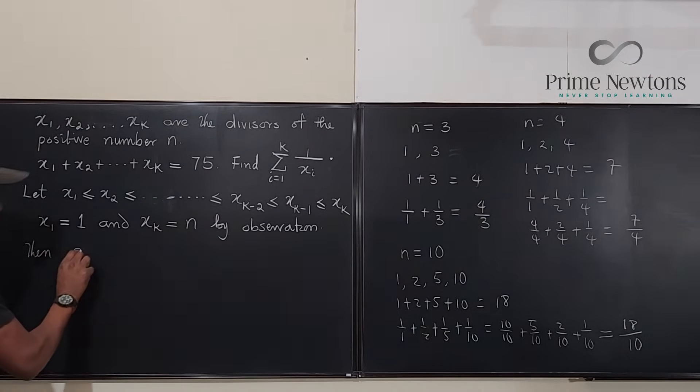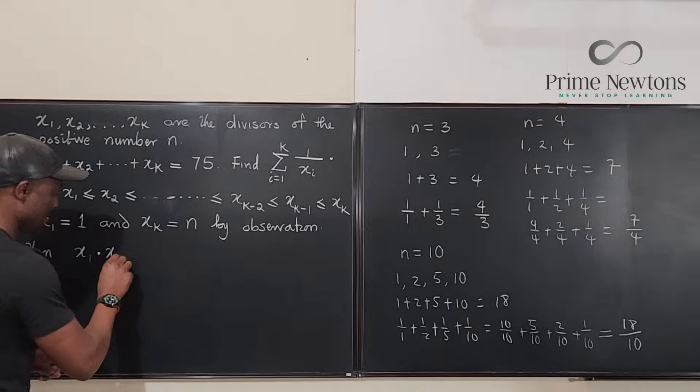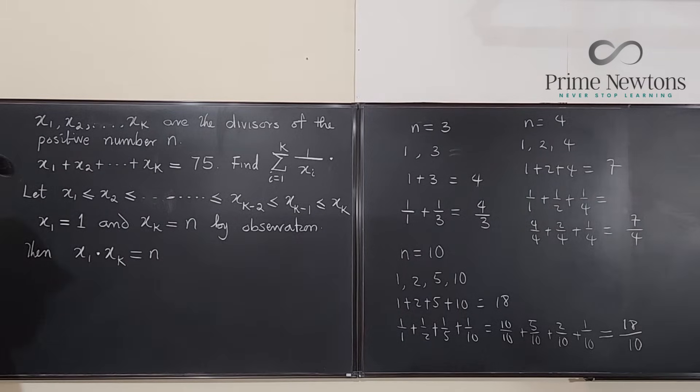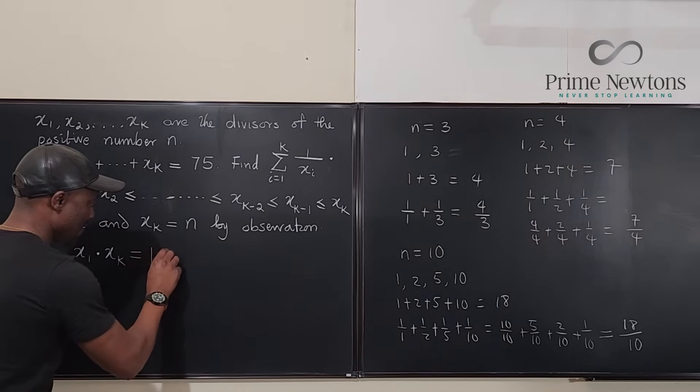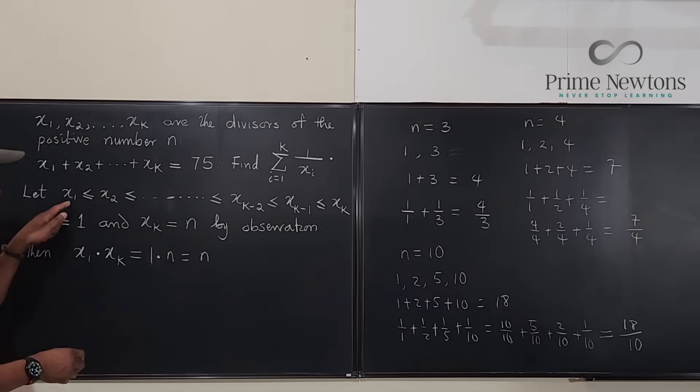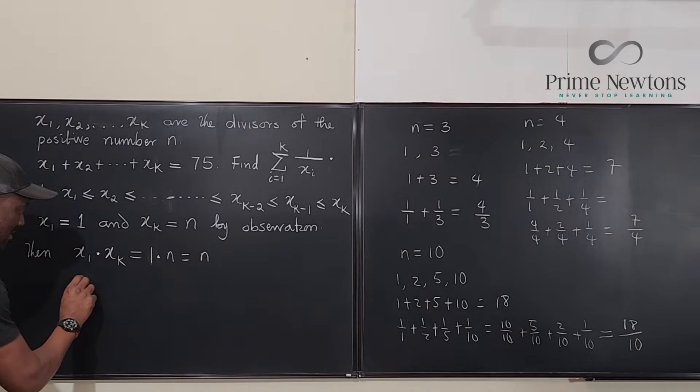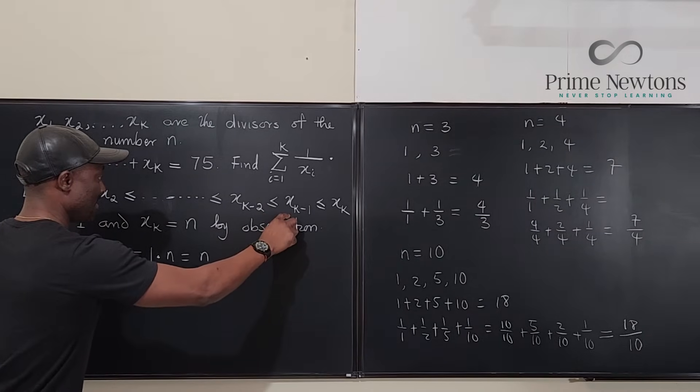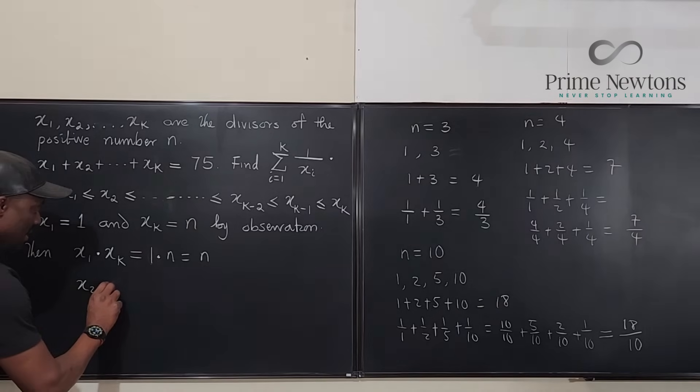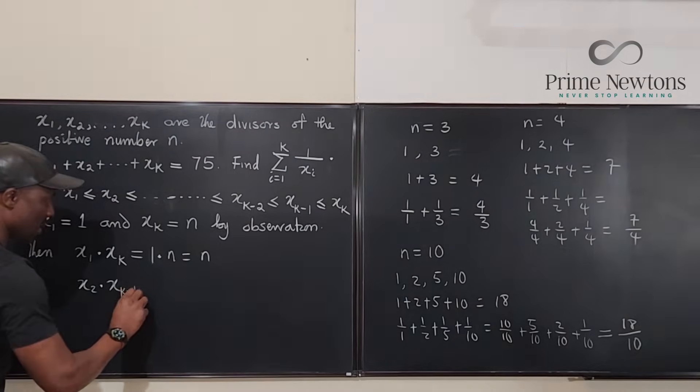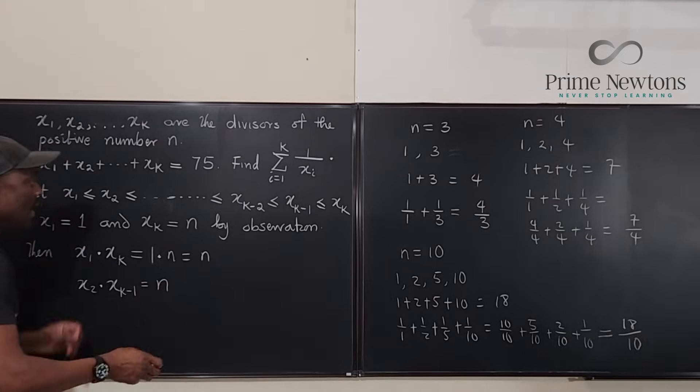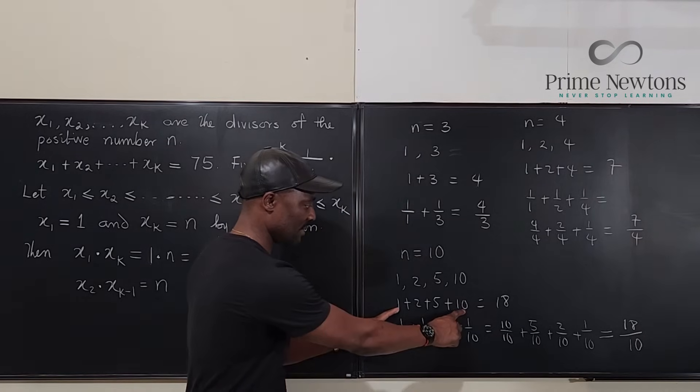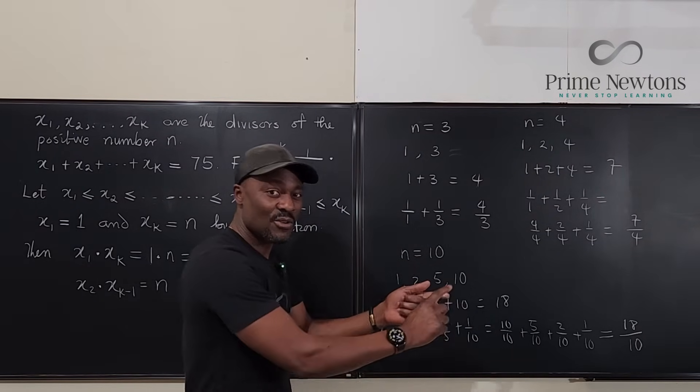Then, x1 times x sub k must be equal to n because this is 1 times n, which is equal to n. If you pick the next one here, x2 multiplied by x sub k minus 1 will be equal to n also. So, look at this. Look at the 10 one. Look at this one. 1 times 10 gives you 10. 2 times 5 gives you 10. That's how you keep going. You keep going. You keep going.